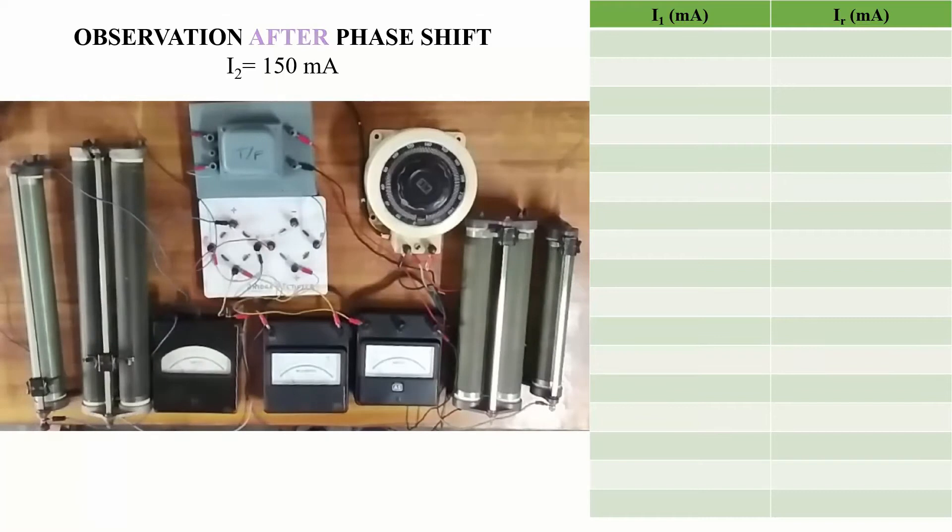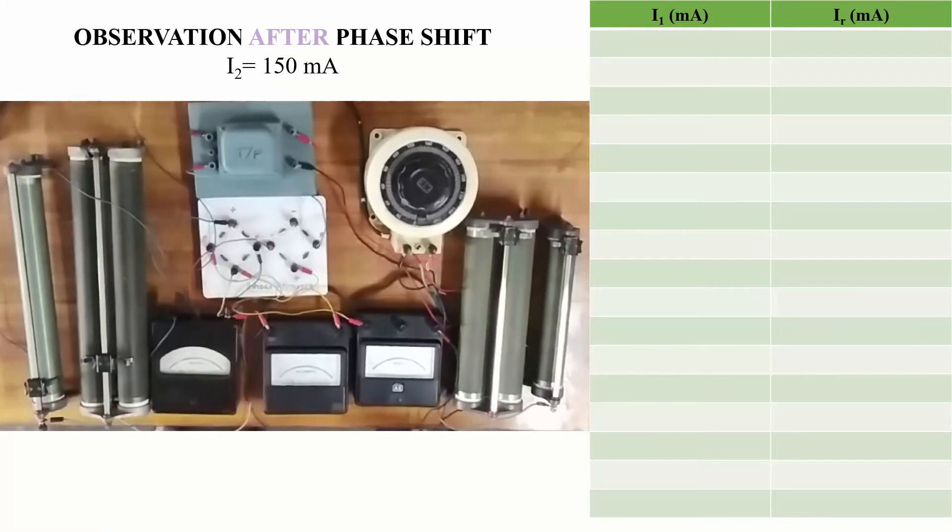In a similar manner we will be taking the readings for this particular part by varying the current I1 and observing current IR. Thus we will observe a set of readings similar to the first part of the experiment.